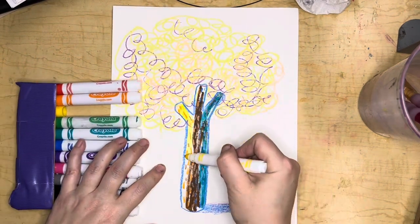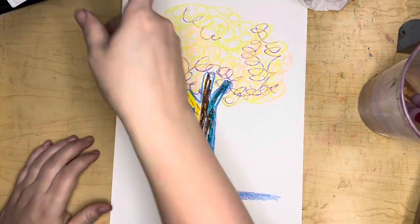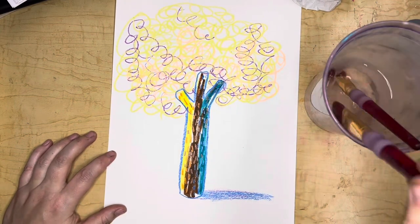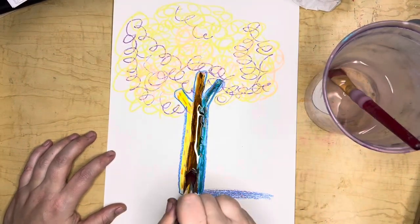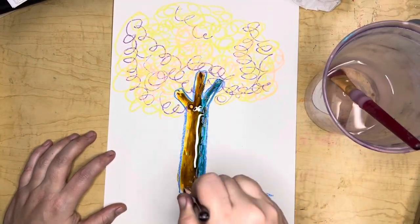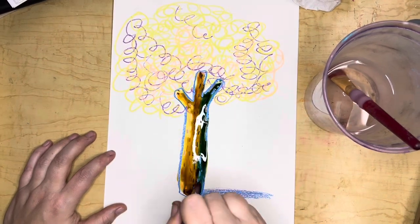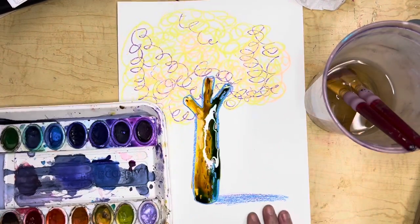I'm using brown, yellow, and blue on my tree. Now watch what happens with a watery brush. It works just like watercolor paint to make my trunk look like a textured tree full of color.